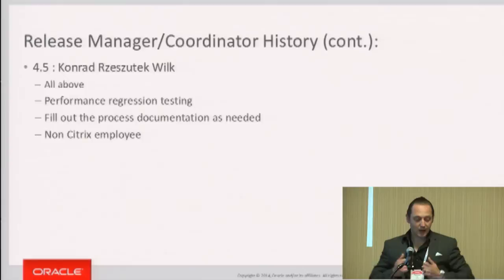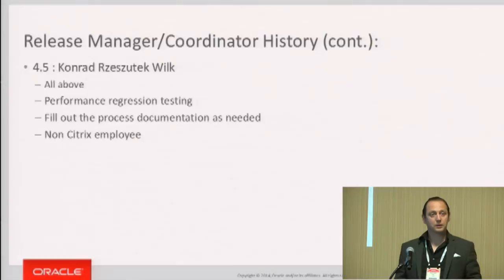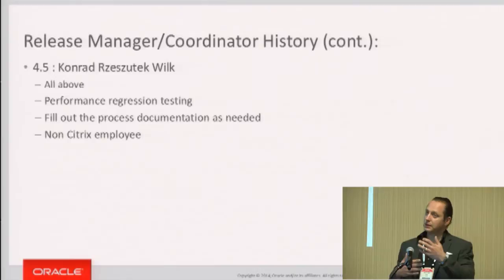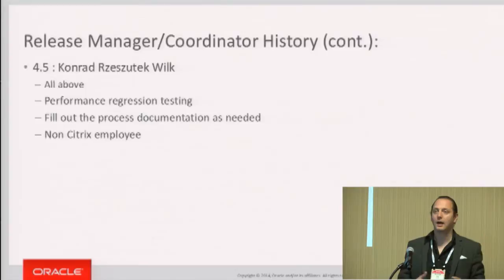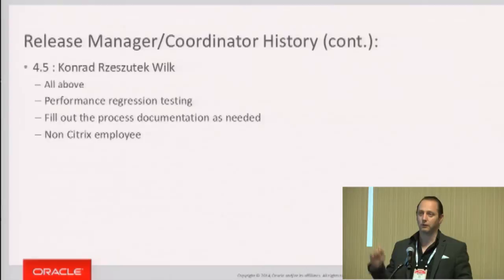George mentioned the different test frameworks we use: OSSTest and XenRT. Internally, the Linux Xen subsystem maintainers David and Boris use something called XTT, which tests Linux against different versions of Xen to check for regressions. It's great during merge windows when regressions appear everywhere and need fixing — by the time the release comes out, it's beautiful and works great under Xen.